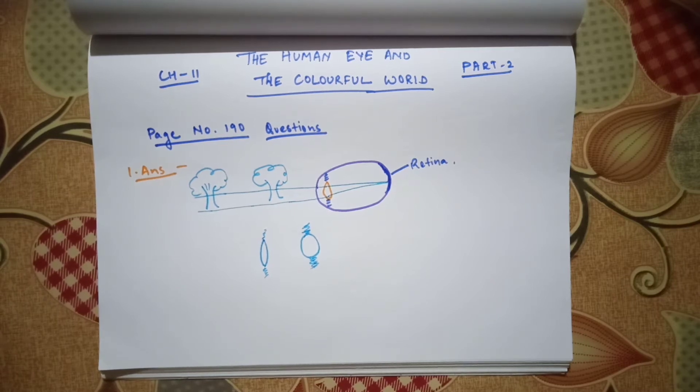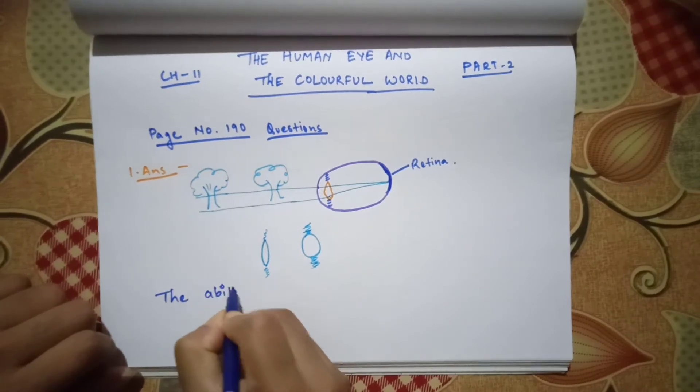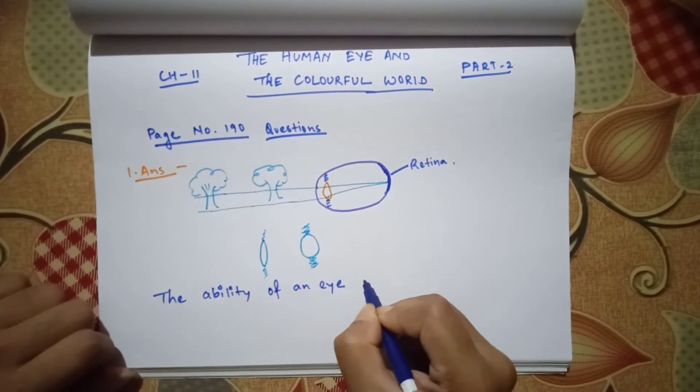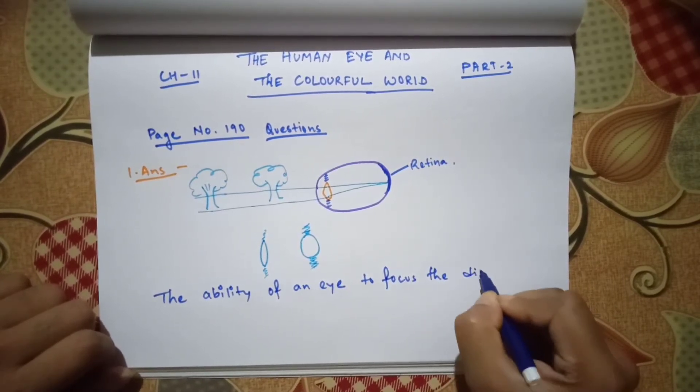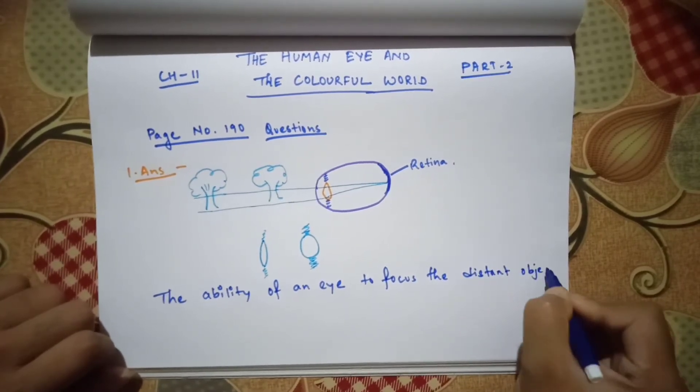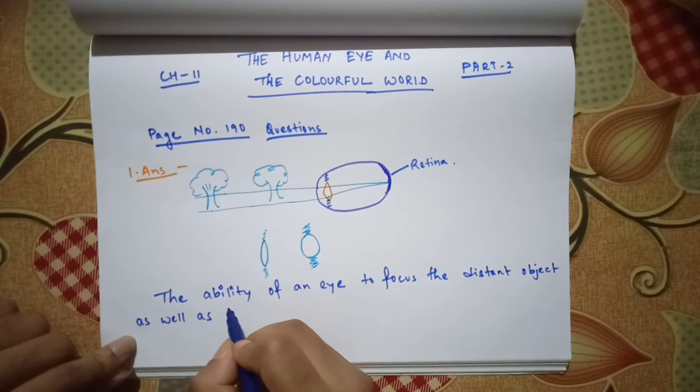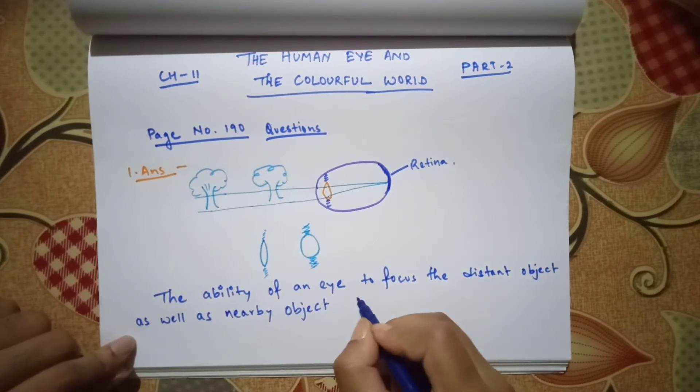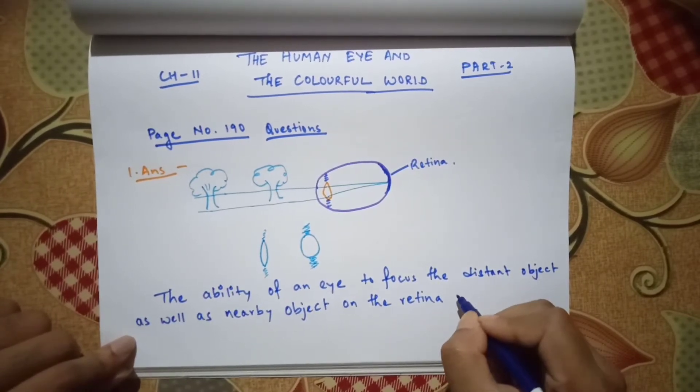Now what we have to write in the answer section. The answer will be: the ability of an eye to focus the distant object as well as nearby object on the retina.